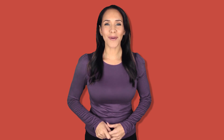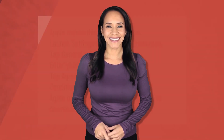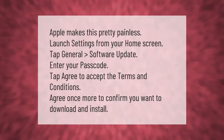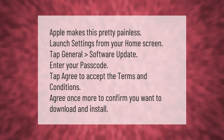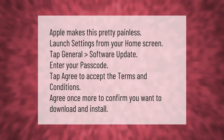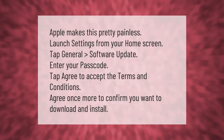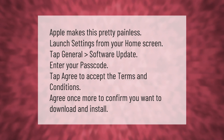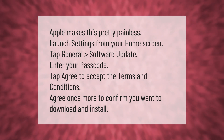Apple makes this pretty painless. Launch Settings from your home screen, tap General, then Software Update. Enter your passcode, tap Agree to accept the terms and conditions, then agree once more to confirm you want to download and install. Thank you for watching — please subscribe and hit the bell notification.